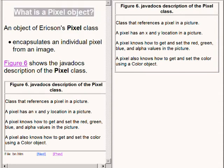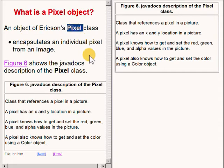An object of Ericsson's pixel class represents or manages the red green and blue color values as well as the alpha values for an individual colored dot in an image.